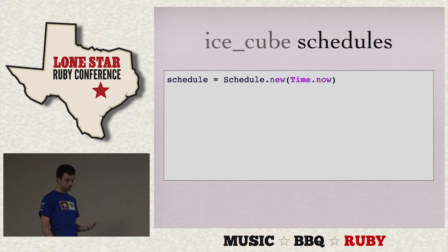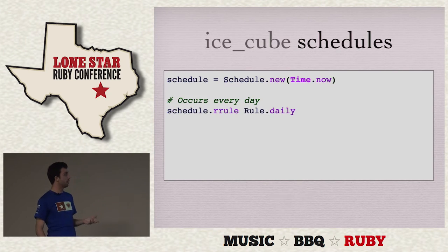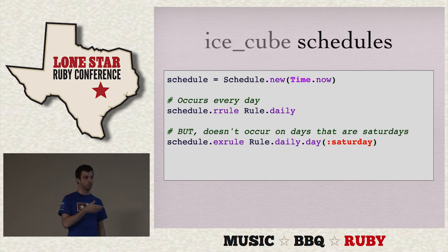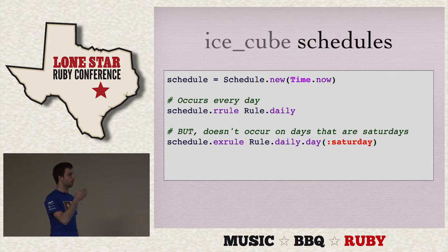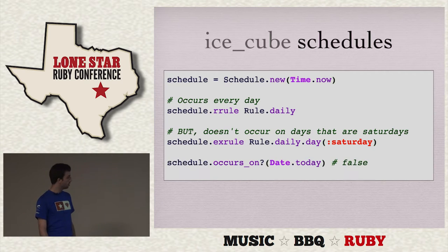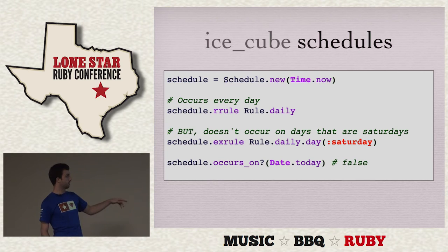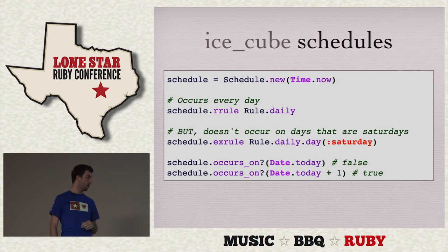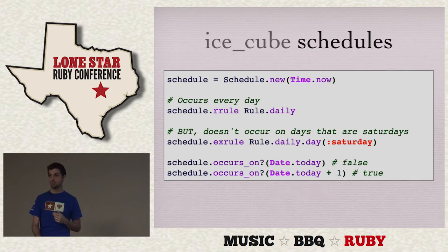So then schedules group rules. You can make a new schedule that starts now and occurs every day: schedule.rrule(Rule.daily). But it doesn't occur on days that are Saturdays: schedule.exrule(Rule.daily.day(:saturday)). You can combine different types of rules — and this is why it's rrule and not just rule, because you can actually have exclusion rules as well as recurrence rules. So when you ask if this occurs today, it doesn't, because today is Saturday. And when you ask if it occurs tomorrow, it does, because tomorrow is not Saturday.